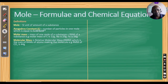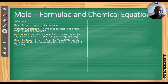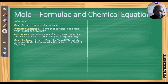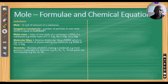Molecular mass, or relative molecular mass (RMM), is the sum of the RAMs of atoms making a molecule. For example, carbon dioxide CO₂ is 44 because it is composed of one carbon (12 g) and two oxygens (2 × 16 = 32 g). So 12 + 32 = 44 grams.